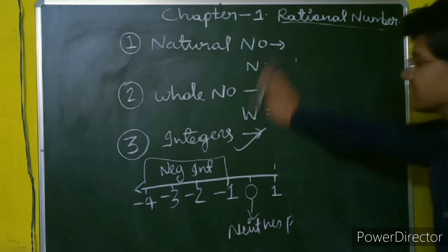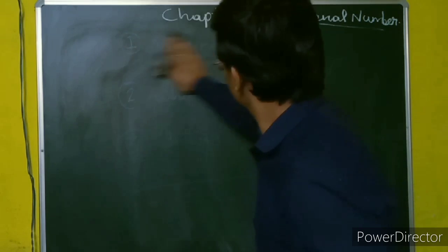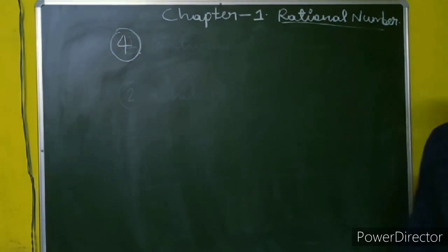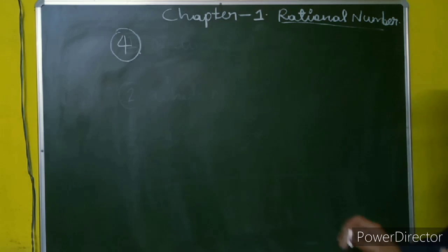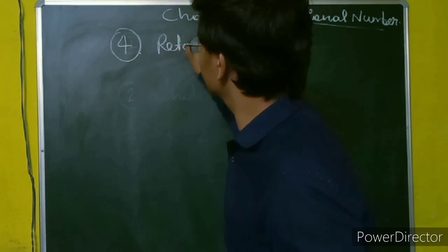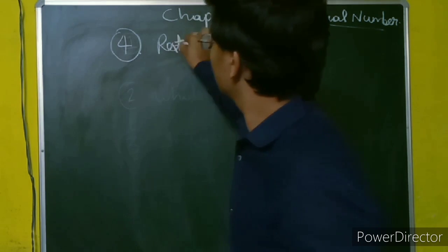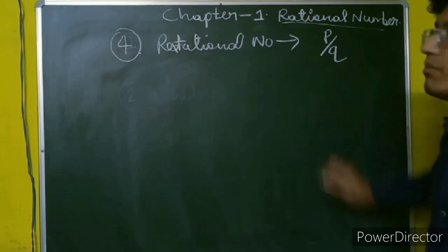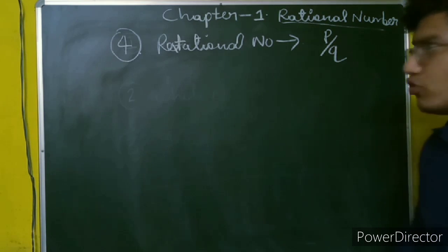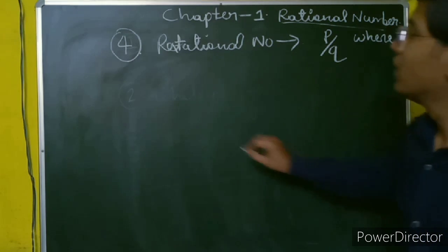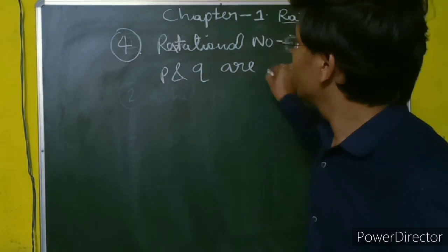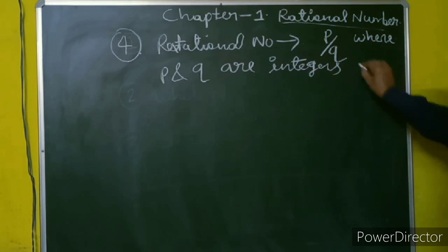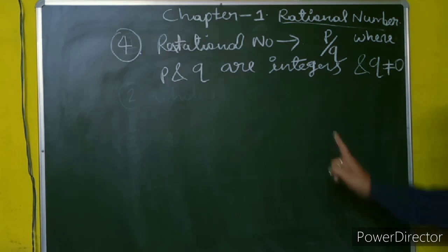The fourth type of numbers are rational numbers. A rational number is a number which we can write in the form of P upon Q, where P and Q are integers and Q is not equal to 0.